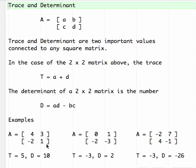First, trace 4 plus 1 is 5, and determinant 4 minus negative 6 is 10. Be careful with your signs when you execute this.